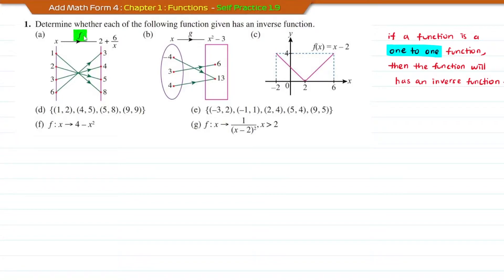The function F maps x to 2 plus 6 over x. Based on the arrow diagram, each object only maps to one image. Therefore, this is a one-to-one function, and this function F will have an inverse function. I put a tick here to indicate this function has an inverse function.